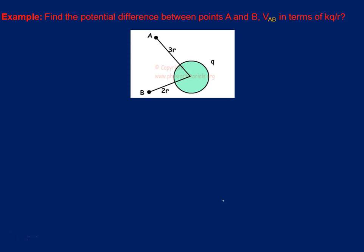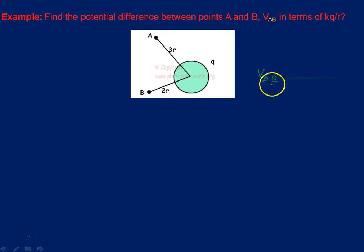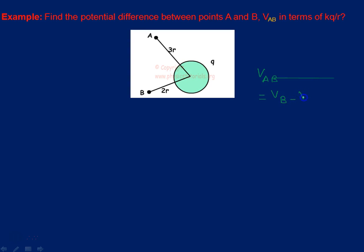Potential difference. This is the same topic you discussed in class 10, but you are still supposed to know it. VAB by convention means VB minus VA. I think you can easily calculate VB and VA — no need to explain further.